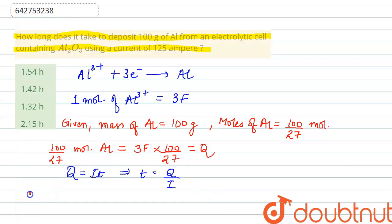Our value of time t will be equal to Q, which is 3 × F (the Faraday constant is 96,500 coulombs per mole) × 100/27, divided by I, which is 125 amperes.